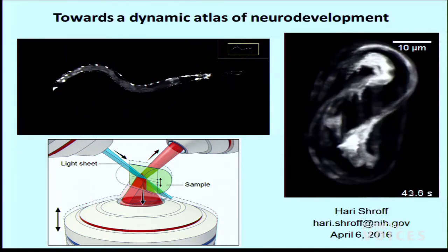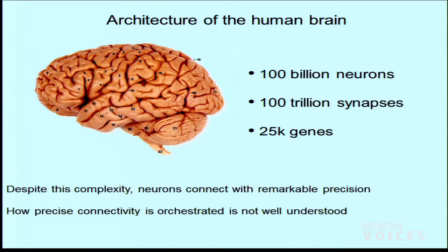To take a step back: all of you have about 100 billion neurons, orders of magnitude more synapses, and about 25,000 genes. Somehow, despite that incredibly large parts list, these parts all come together as we grow up in order to form our functioning brains. And how they come together is really not well understood.